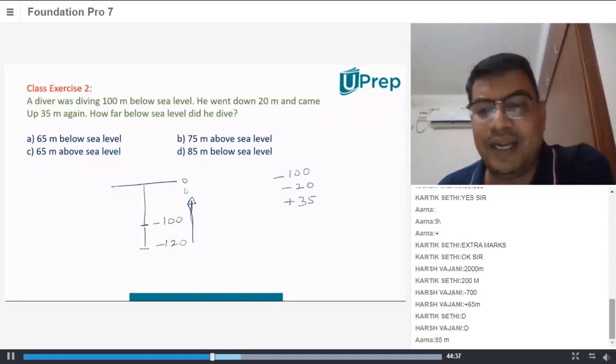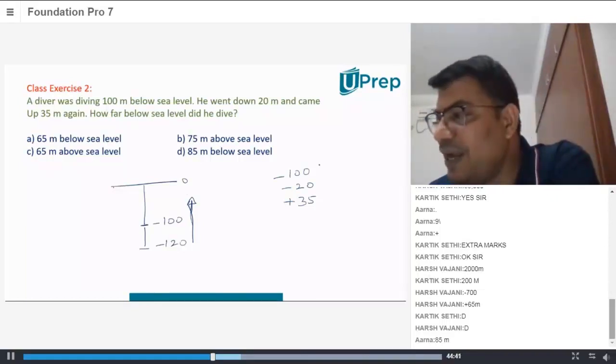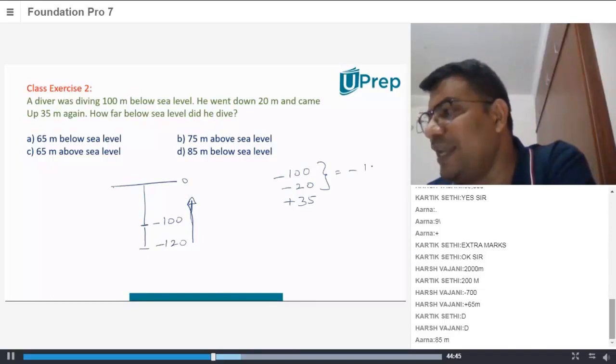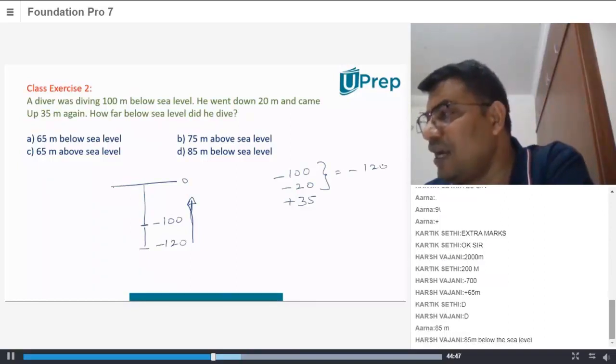Minus 100 minus 20 plus 35. How do you add these numbers? Minus 100 and minus 20, 120 will be this, will be equal to minus 120, and for that minus 120 you will add plus 35.